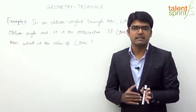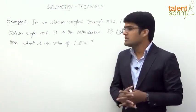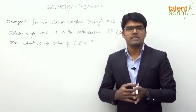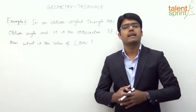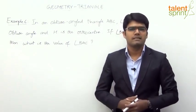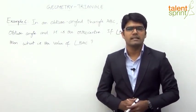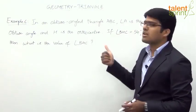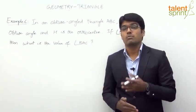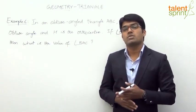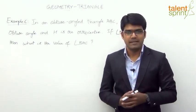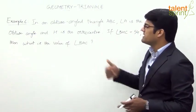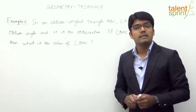There is an obtuse angled triangle ABC where A is the obtuse angle. An obtuse angle is greater than 90 degrees and less than 180 degrees. H is the orthocenter — the point of intersection of the altitudes of a triangle — and angle BHC is 54 degrees.